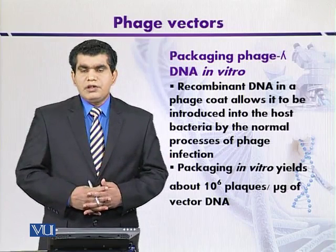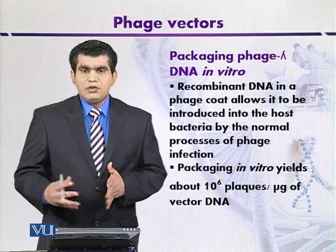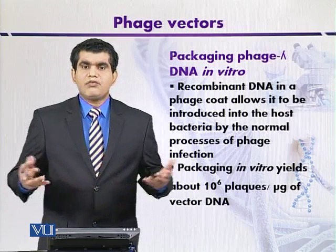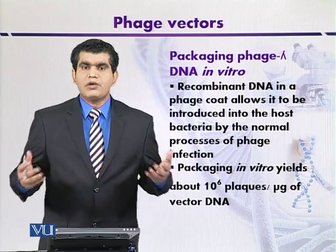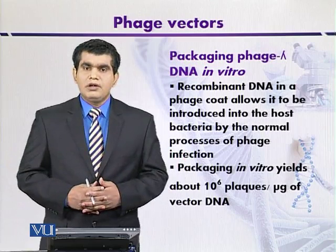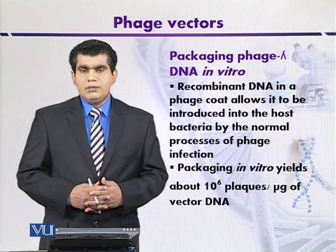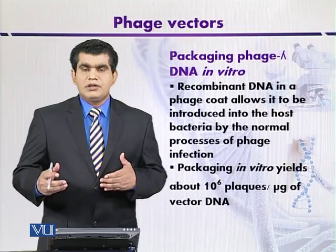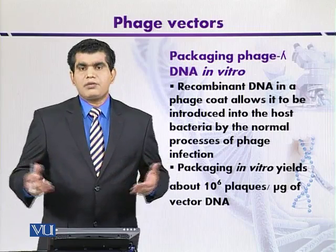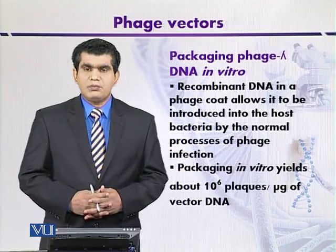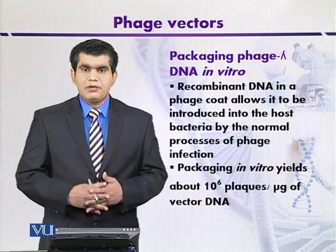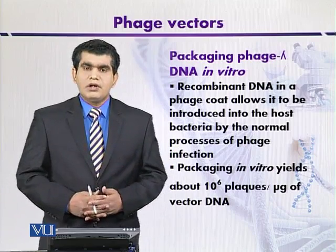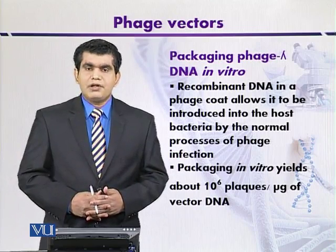Naturally, if we use a lambda genome which has not been modified and it is wild type, and if we use it to infect host organisms like E. coli, then the plaques may be up to 10^6 plaques per microgram of lambda genome. So the efficiency of plaquing is more or less optimum if we are going to use unmodified lambda genome.